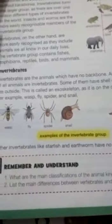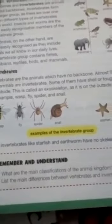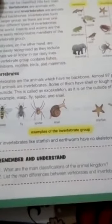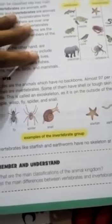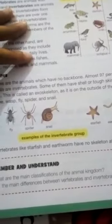This is your task: What are the main classifications of the animal kingdom? Which are the two classifications of the animal kingdom? You have to list the main differences between vertebrates and invertebrates in your rough notebook. Now we have learned about vertebrates and invertebrates.